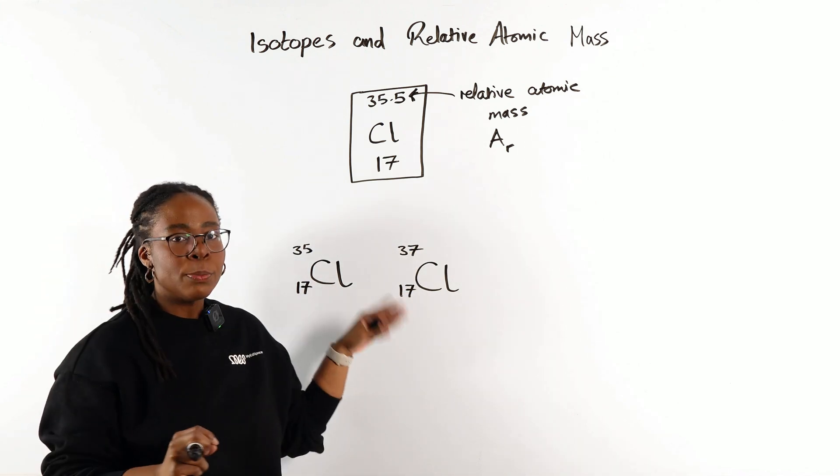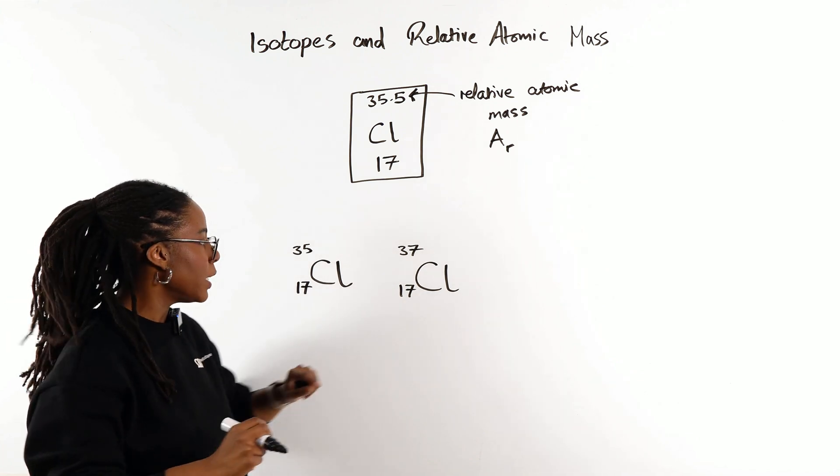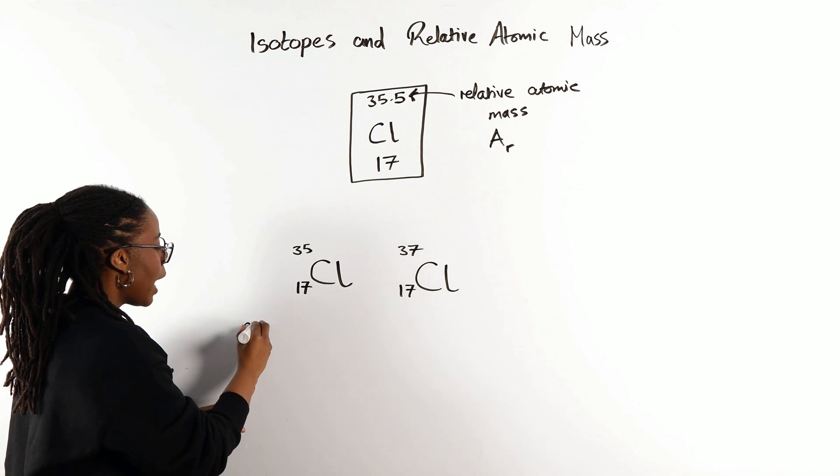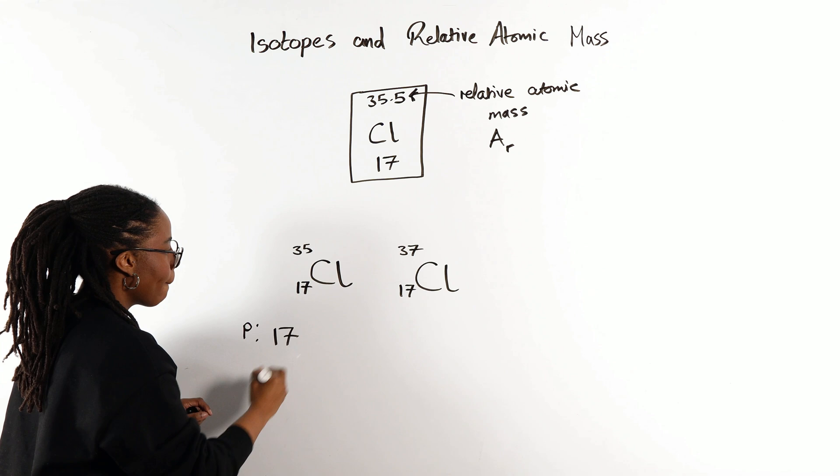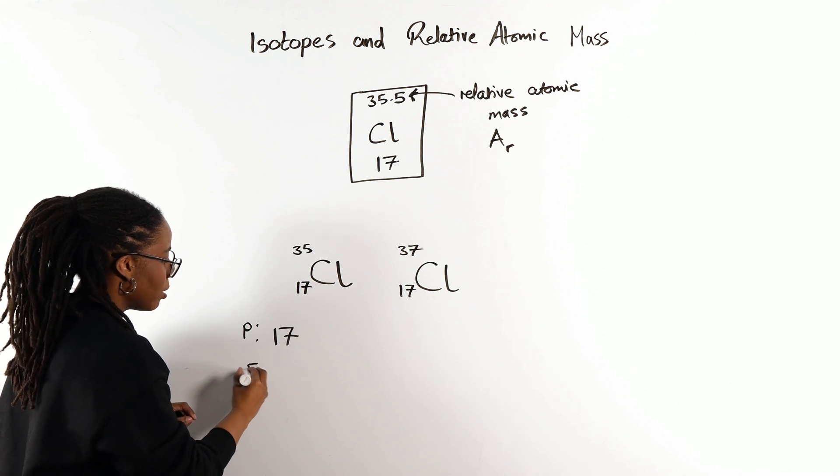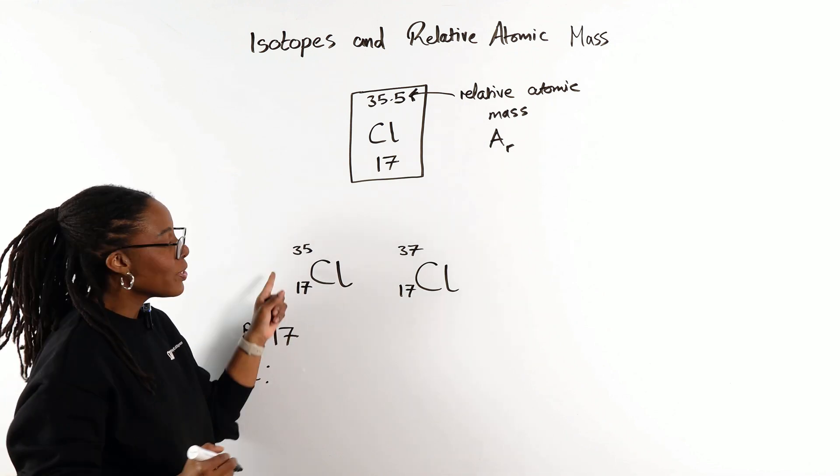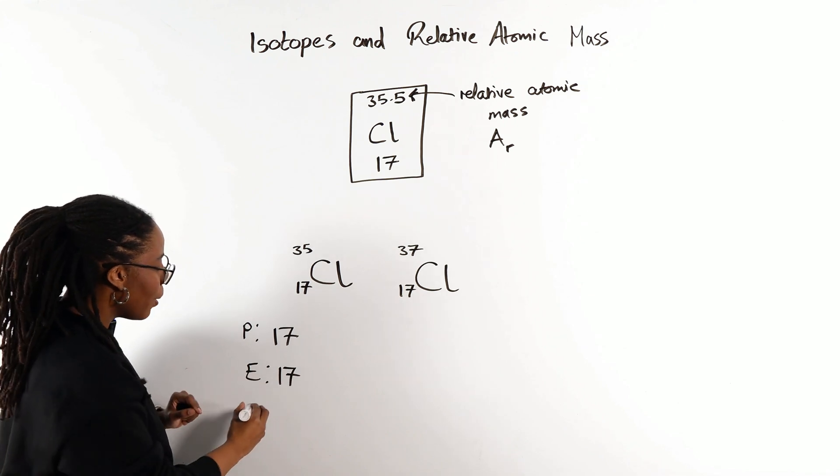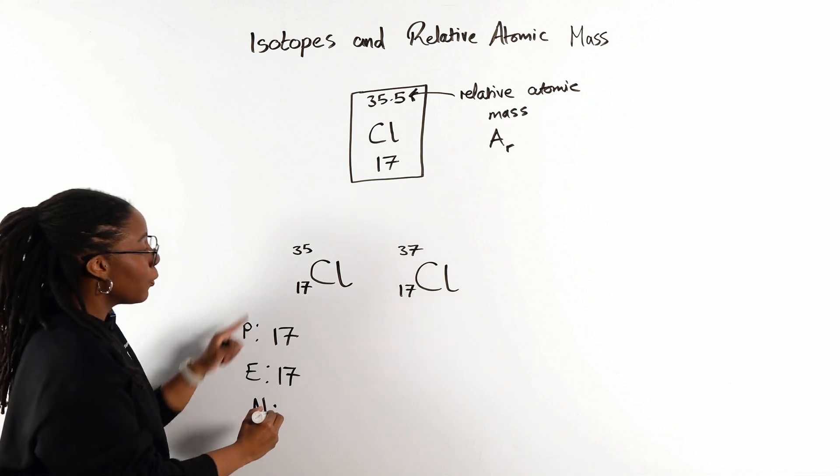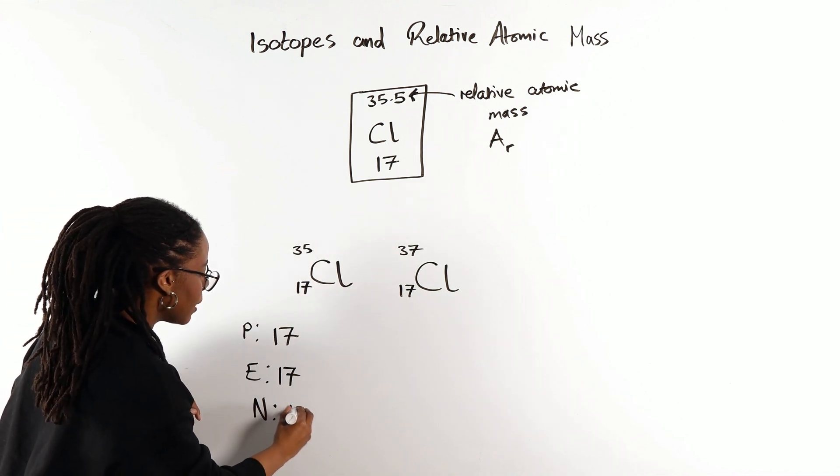So let's consider how many protons, how many neutrons and how many electrons we have in each of these. For our first one, our protons, that's given by our atomic number, so that's 17. Our electrons, let's do that next. For a neutral atom, the number of electrons is the same as the number of protons, so also 17. And the number of neutrons we get from our mass number minus our atomic number to give us 18.